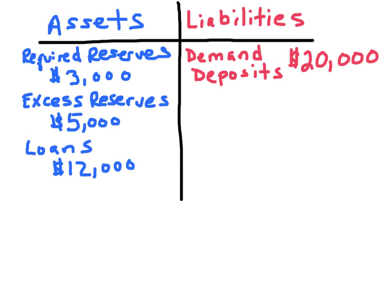Let's say you put money into your bank, into your checking account. Those are known as demand deposits. When you take $20,000 worth of cash and deposit it into your bank, it becomes a demand deposit and it's still part of the M1 money supply. If you were to take money out of the bank and convert it to cash, M1 does not change.